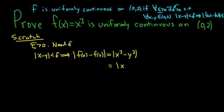So the difference of cubes formula says that this is x minus y times x squared plus xy plus y squared. Then you can just take the absolute value of each piece. So this is the absolute value of x minus y times the absolute value of x squared plus xy plus y squared.